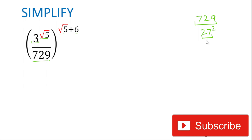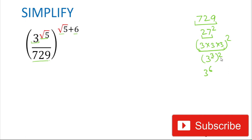We can write 27 as 3 multiplied by 3 multiplied by 3, which is 3 cubed, and that is squared. So 3 cubed squared gives us 3 to the power of 6, because the powers multiply when the base is the same. In place of 729 we can now write 3 to the power of 6.